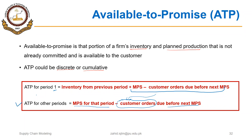Just remember that for period 1, we have to add inventory from the previous period as well. So ATP is MPS for that period minus customer orders due before the next MPS — this is the formula for discrete ATP. Cumulative ATP is just the sum of discrete ATPs.